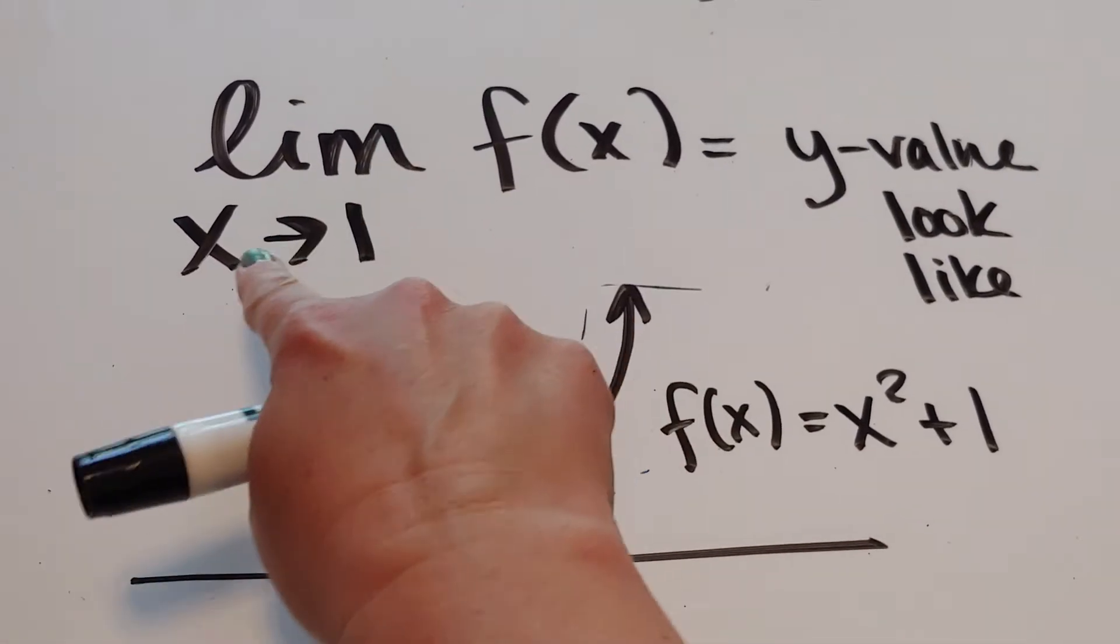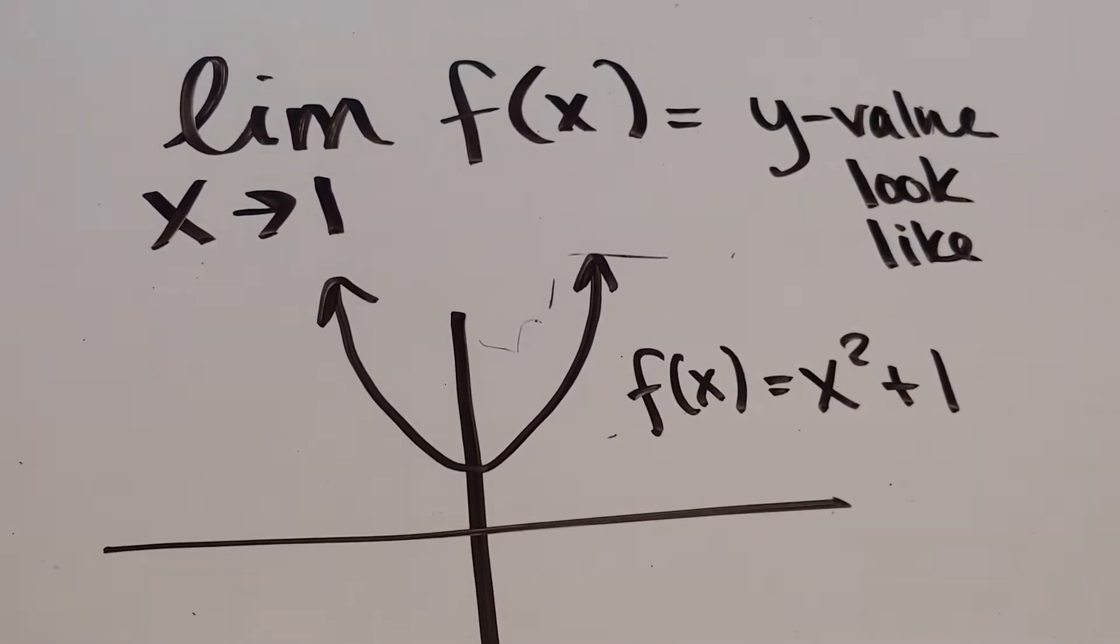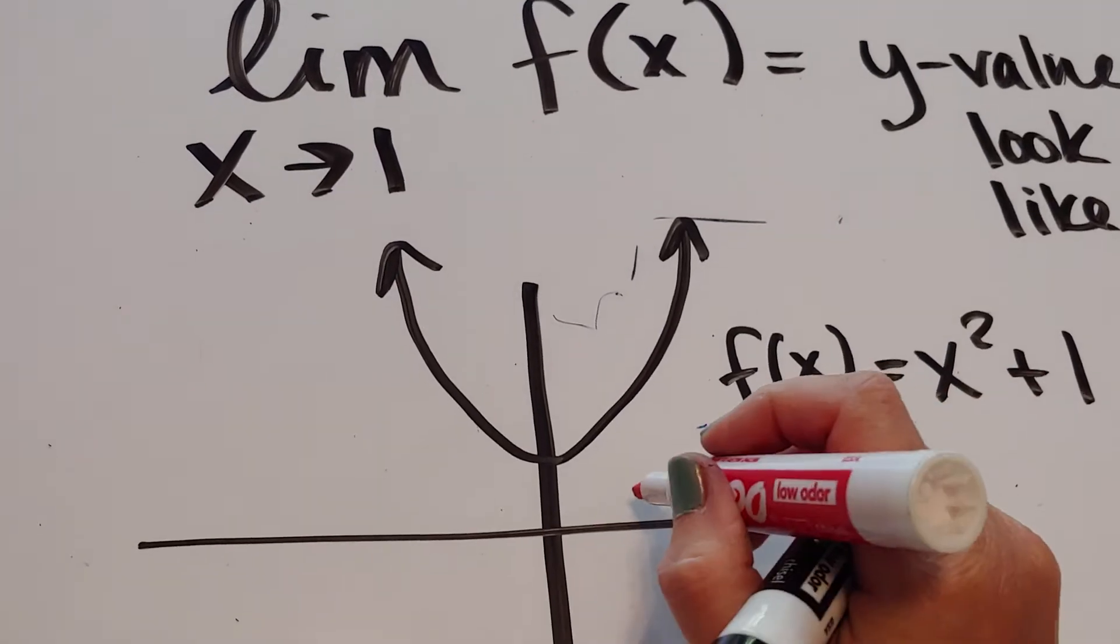So, if I was asked to find the limit as x approaches 1 of f of x of this graph, I would go over to this graph. I would walk near x is 1.